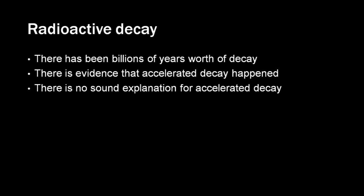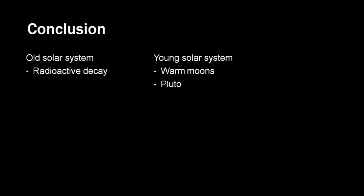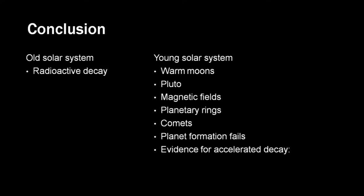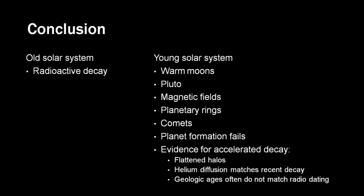Nonetheless we can see that billions of years worth of decay has happened in the past. But there is evidence for accelerated decay but there is no sound explanation for it. So here is the conclusion for the first half of this presentation. There is one piece of evidence that seems to point to an old solar system and that is radioactive decay. The evidence for a young solar system is warm moons, Pluto, the magnetic fields, planetary rings, comets, the planet formation theory fails, and there is evidence for accelerated decay.